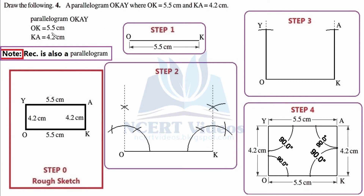OK is a continuous side of the parallelogram equal to 5.5 centimeters, as written here. KA is another side of the parallelogram equal to 4.2 centimeters. Now, using the properties of parallelograms — we are not provided with the angles.